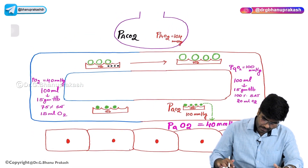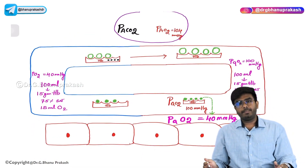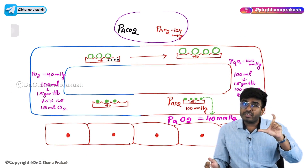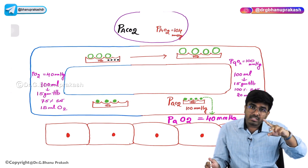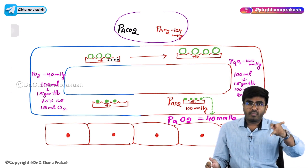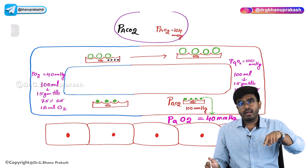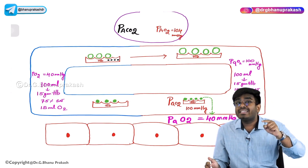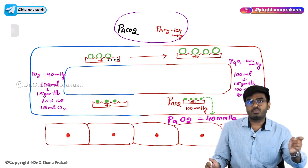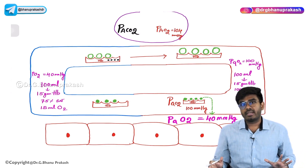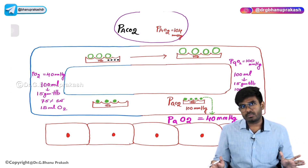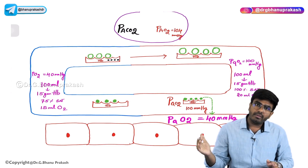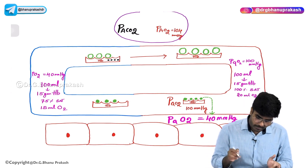Let's see what's happening at the level of lungs and at the level of tissues — how oxygen is transported from the lungs into the blood, and how oxygen is delivered from the blood to the tissues. In this video, we will be mainly discussing oxygen transport. In the later video, we will discuss carbon dioxide transport.